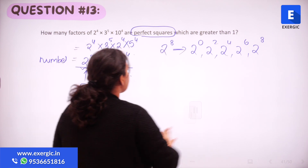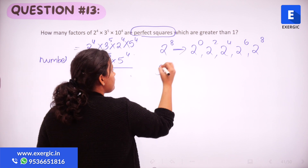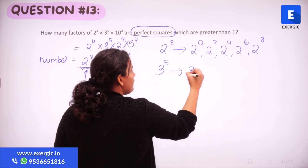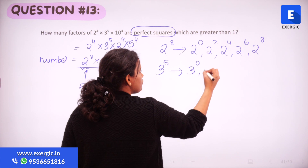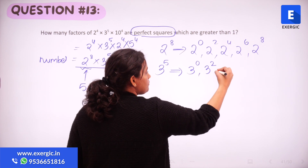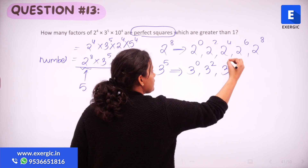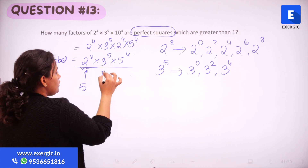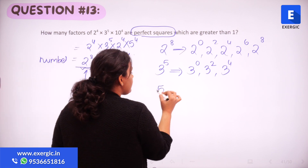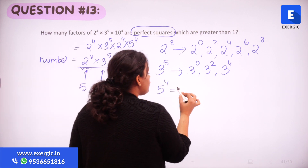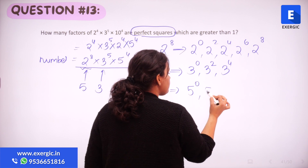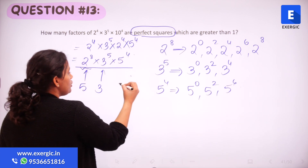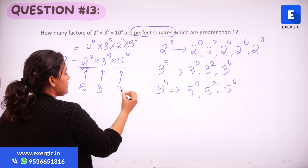Similarly, for 3 raised to the power 5, the acceptable powers are 3⁰, 3², and 3⁴ — that's 3 values. For 5 raised to the power 4, the acceptable powers are 5⁰, 5², and 5⁴ — also 3 values.